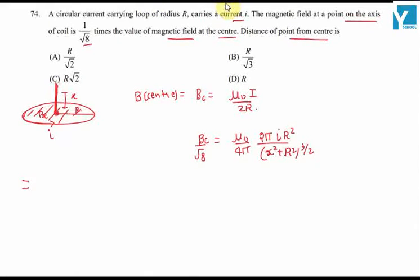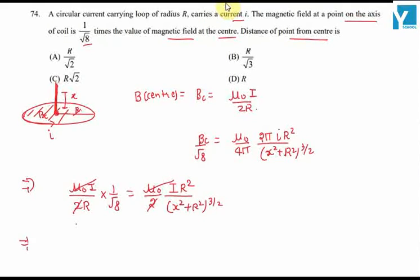Now mu not i by 2R times 1 by root 8 equals mu not i by 2R times R squared divided by x squared plus R square raised to power 3 by 2. This implies x square plus R square to power 3 by 2 equals root 8 times R cube.